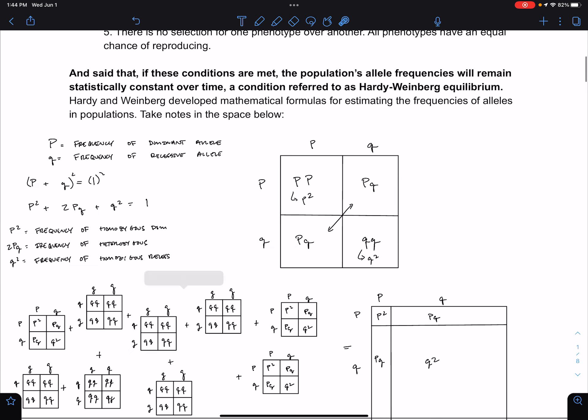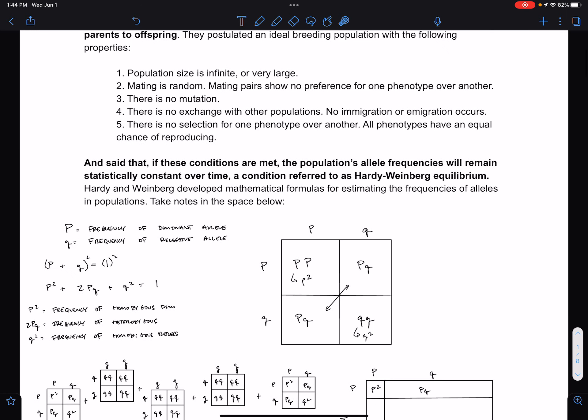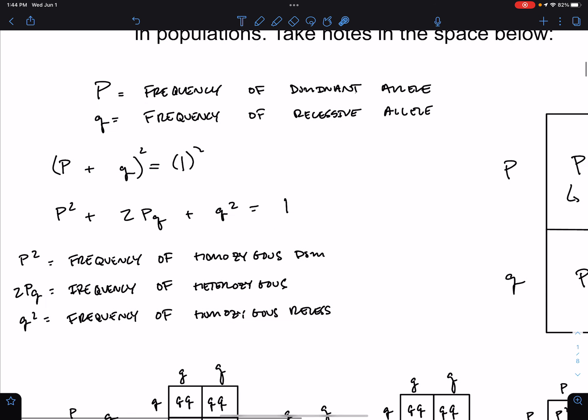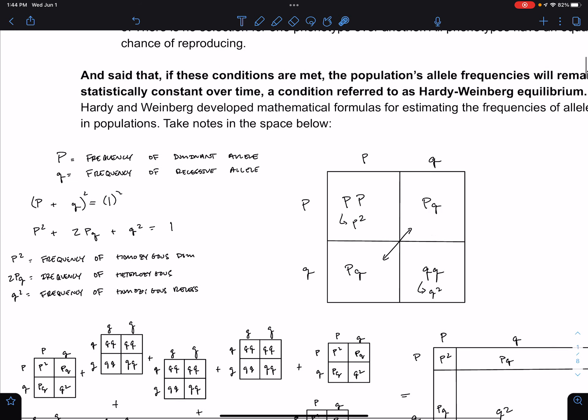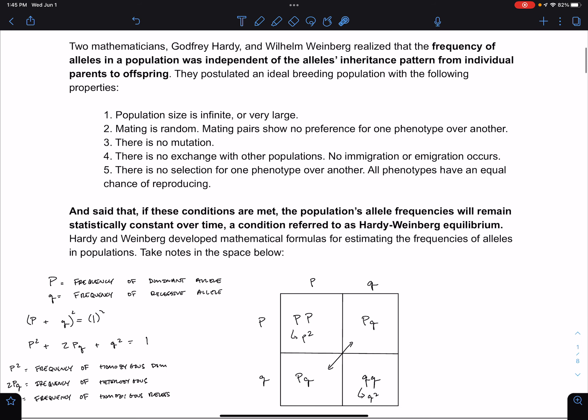Now, why would we want to do this? Well, our null hypothesis, or the hypothesis that Hardy and Weinberg are putting forward, is that we would expect to see allele frequencies remain constant from generation one to generation two to generation three, as long as all of these conditions that I mentioned above are happening or true.